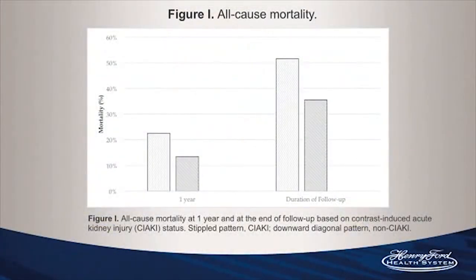CI-AKI occurred in about 23% of our patients, and all-cause mortality was 52% in the CI-AKI group and 37% in the non-CI-AKI group, with a mean follow-up of 2.2 years. The two cohorts were similar with regards to age, sex, race, and BMI, and nearly two-thirds of the patients were male in both cohorts. Both groups had similar rates of diabetes, smoking, and CKD, but there was disparity in NYHA class III and IV congestive heart failure, which was present in 41% of the CI-AKI group and 27% in the non-CI-AKI group.